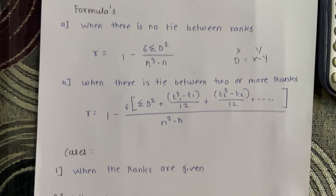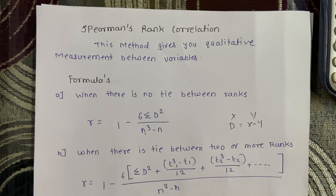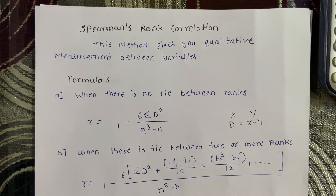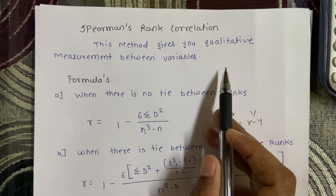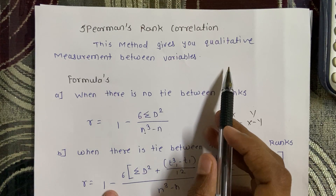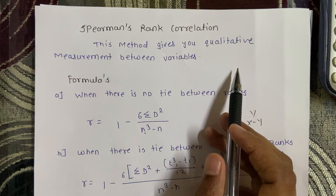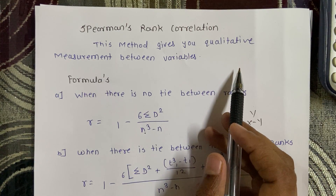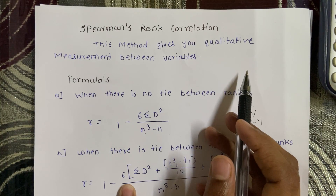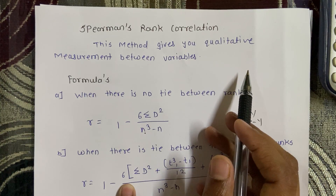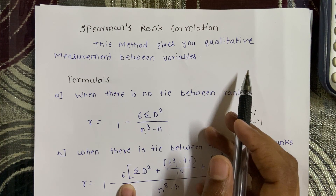Spearman Rank Correlation is generally used for qualitative variables — for example, honesty, bravery, and beauty. These are variables that you cannot directly measure. So we assign ranks to the data values and then calculate the coefficient of correlation.